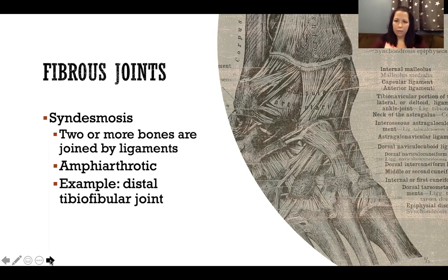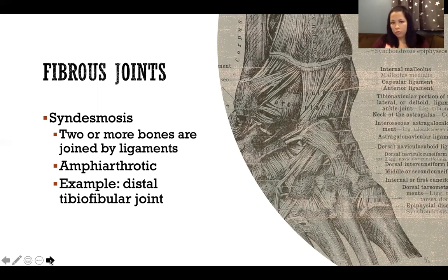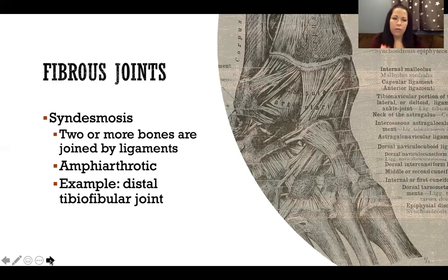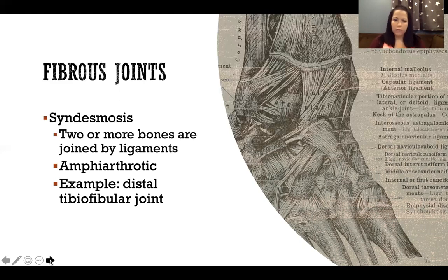When we talk about the actions of the ankle — dorsiflexion, plantarflexion, inversion, eversion, and combinations of those — those are all happening in our freely movable synovial joints of the ankle, like the talocrural joint and the subtalar joint. The whole ankle complex includes three joints: those two and our distal tibial fibular joint. But the distal tibial fibular is a fibrous joint, so it is not responsible for any of the movements of the ankle because it's an amphiarthrotic joint, not a diarthrotic joint. It's there to allow slight movement as the fibula and tibia move relative to one another.